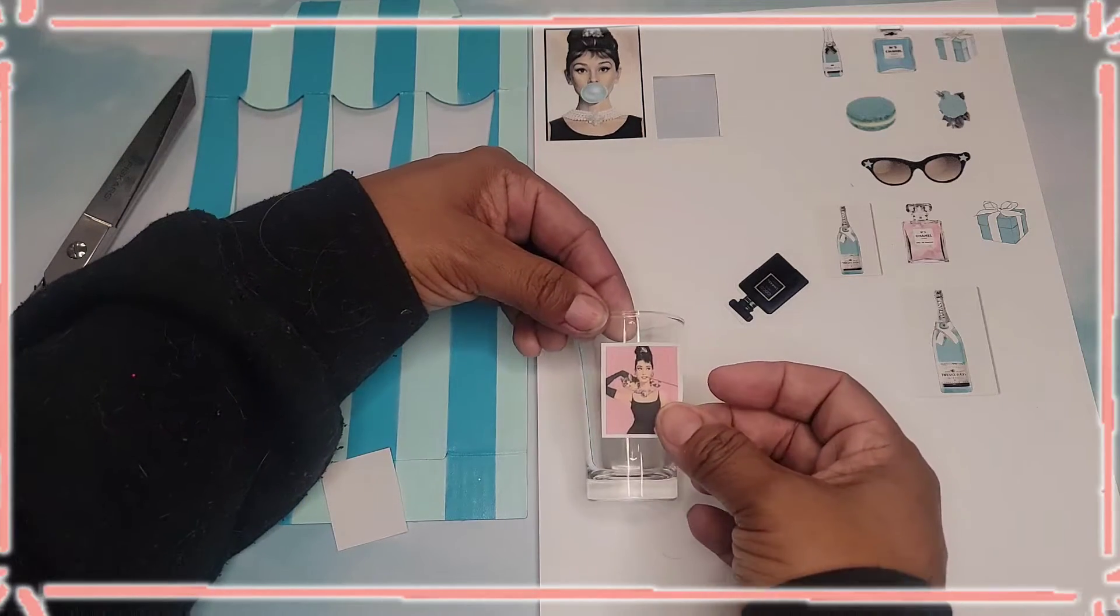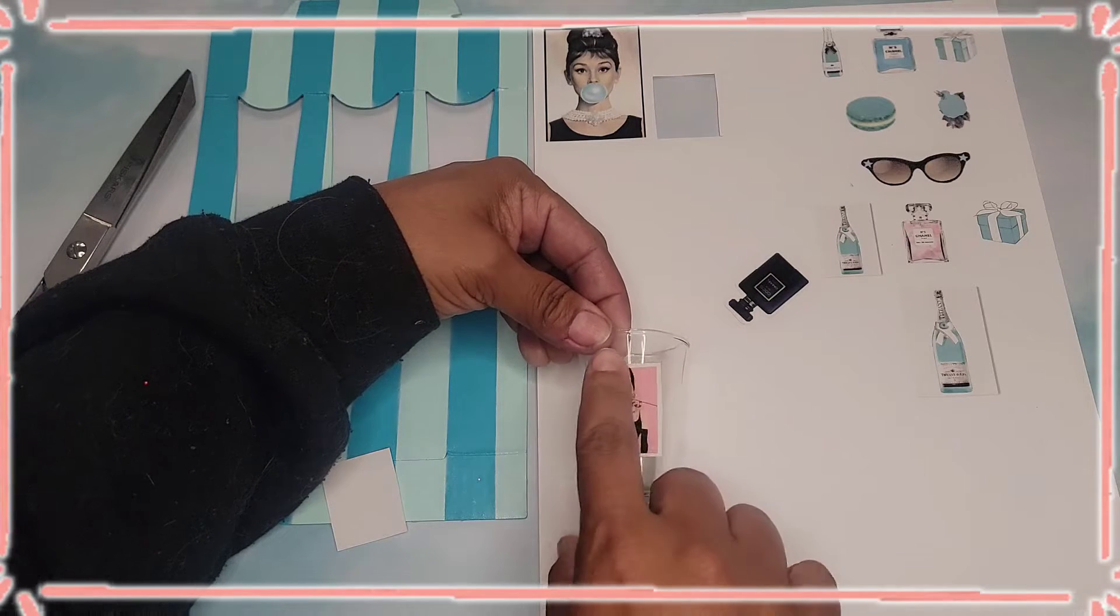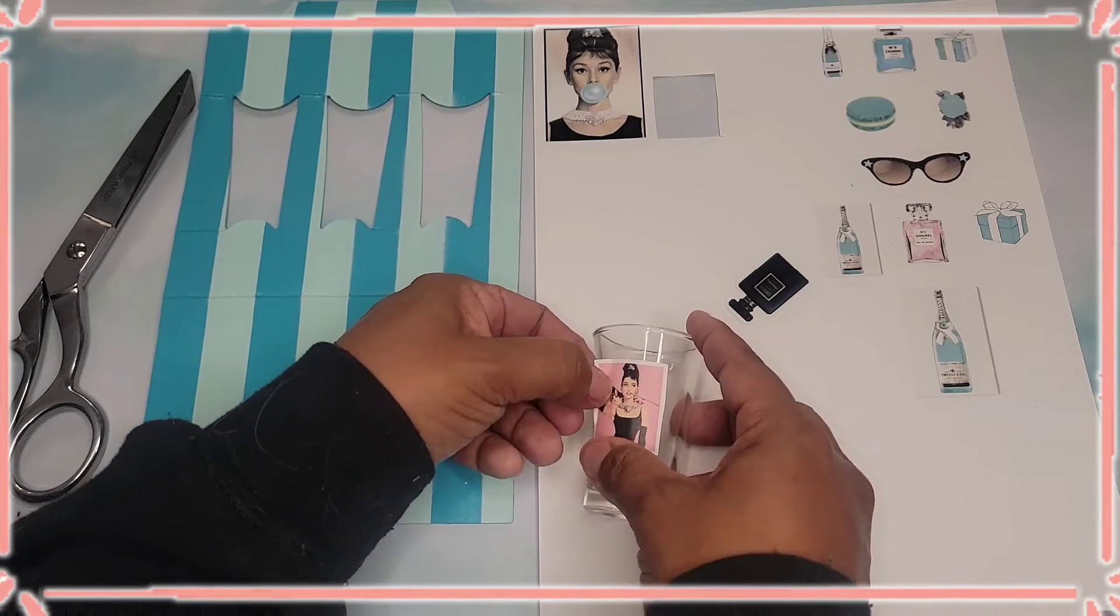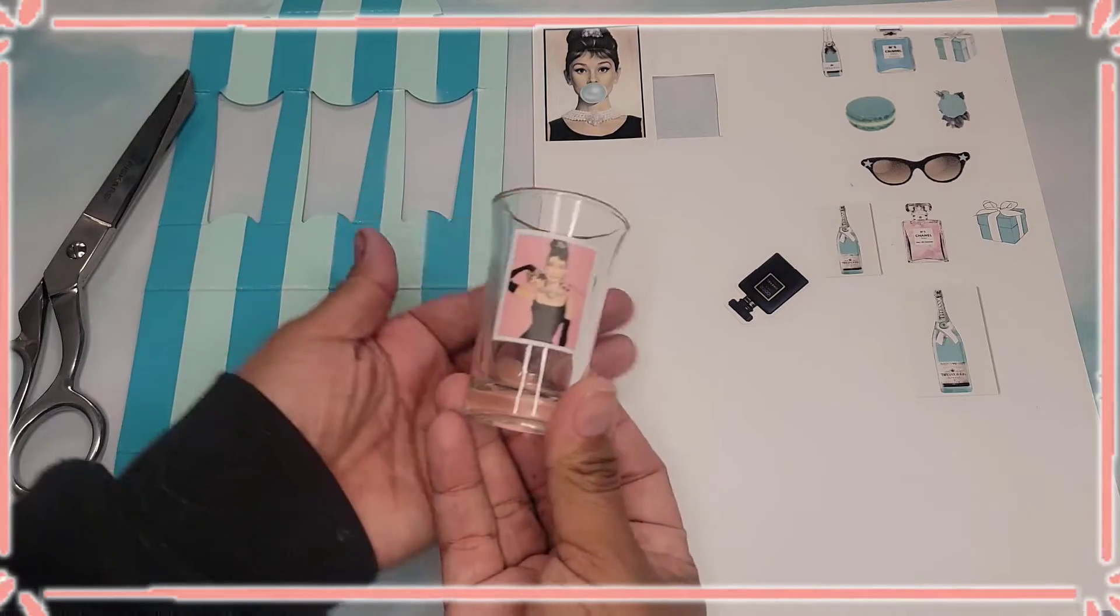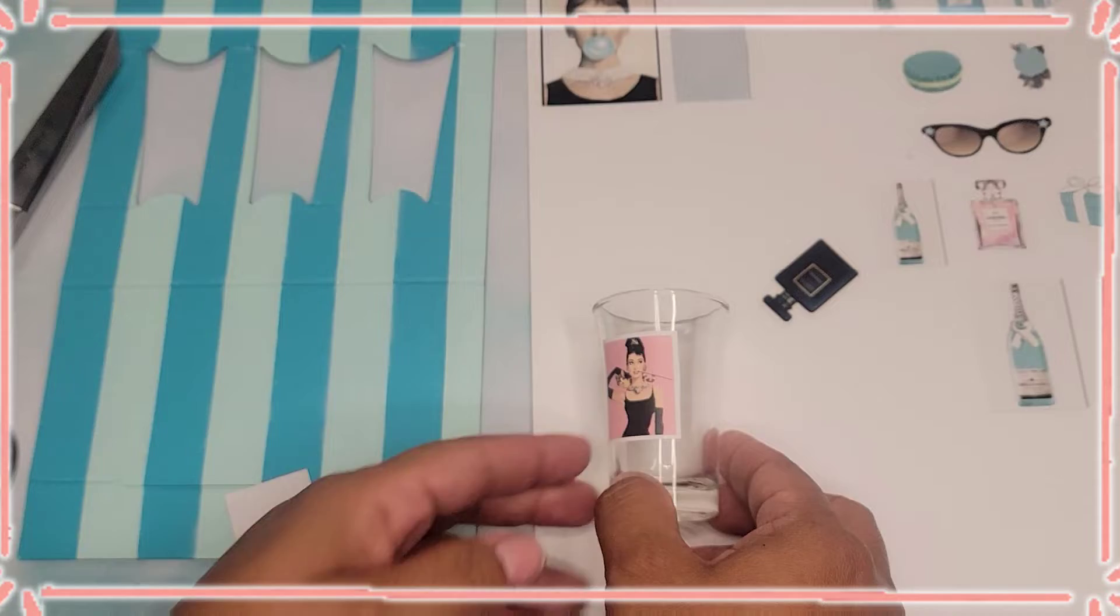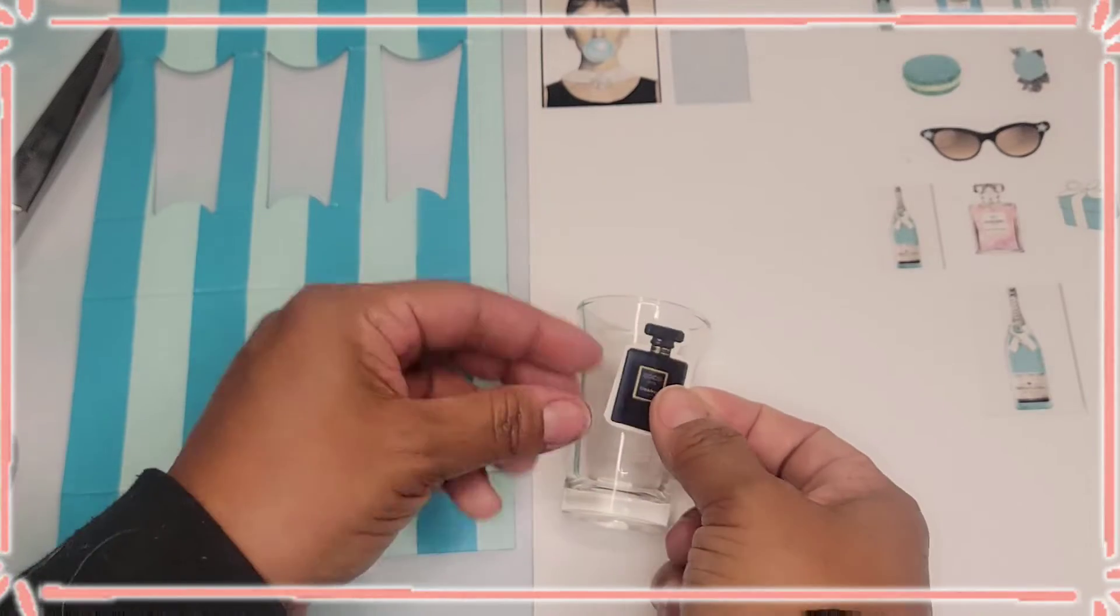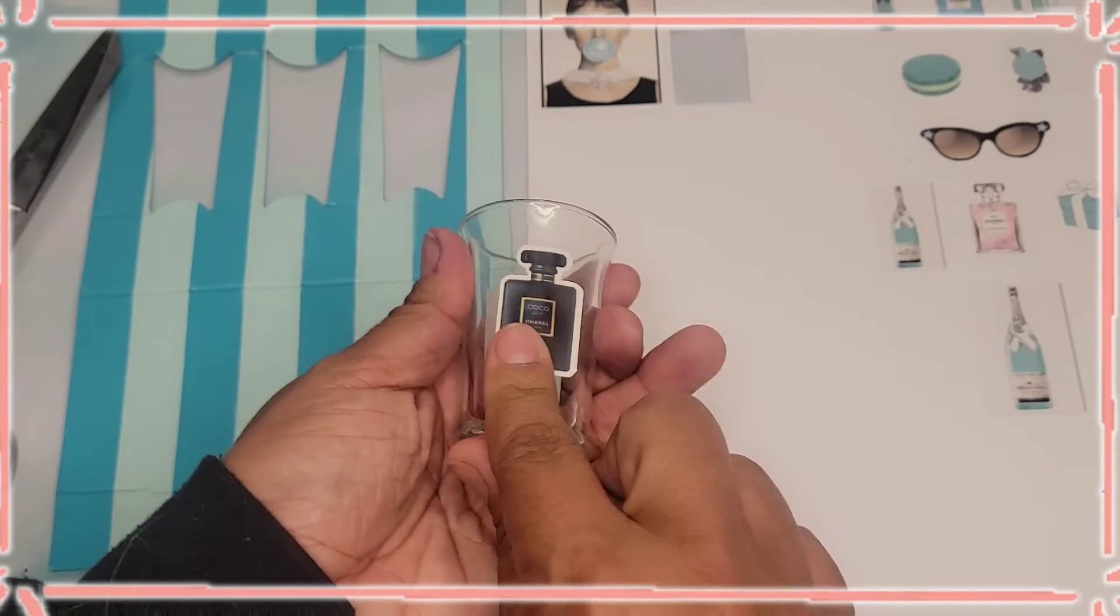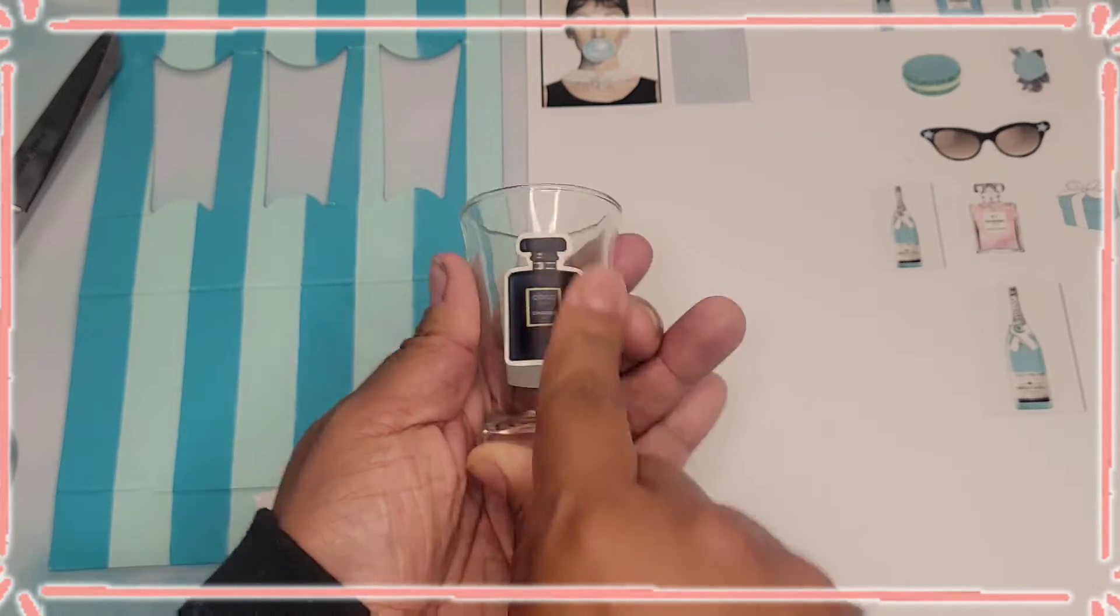We want to put this right on the center of the cup. Oh my gosh, that is so freaking cute. Look at how good that looks. Look at it! I freaking love it. All right, and now I want to put this black on the other side, the black Coco Chanel. I always like to start in the center and then push out. That way you don't get any bubbles or unevenness.